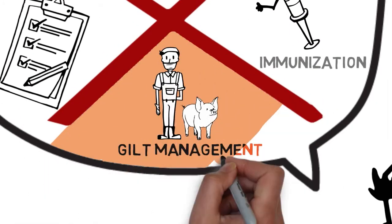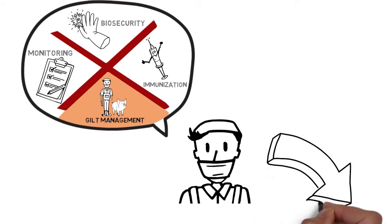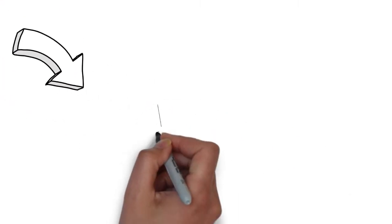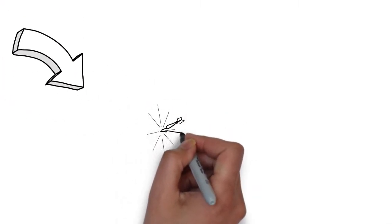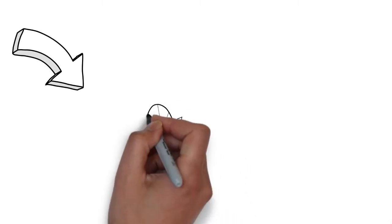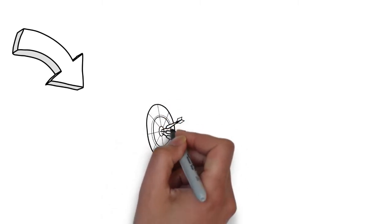The entrance of gilts in a farm has been, and it is still today, one of the main causes of destabilization of the PERS status and a source of entrance of new PERS virus strains, heterologous strains, in farms.